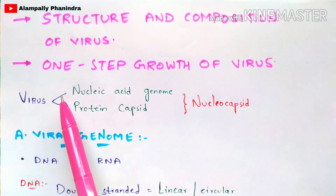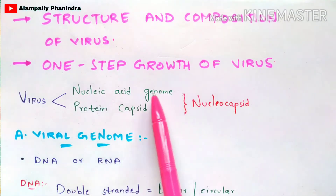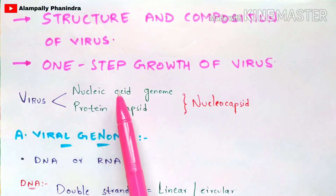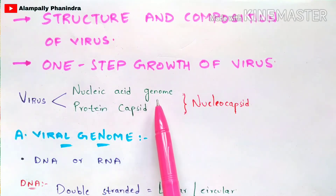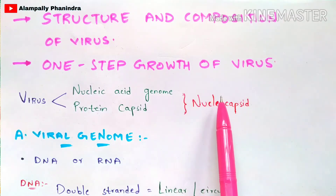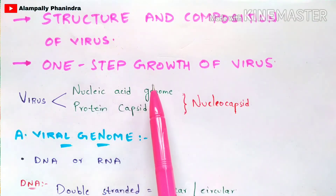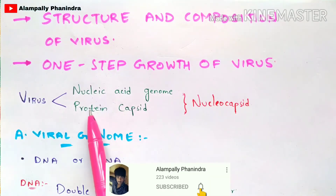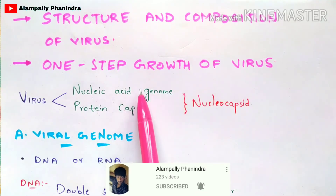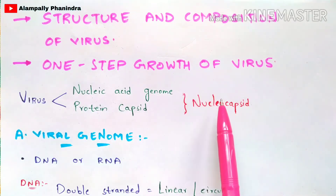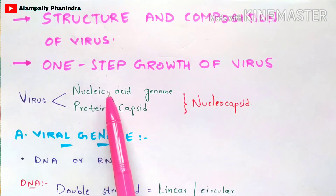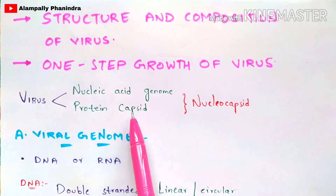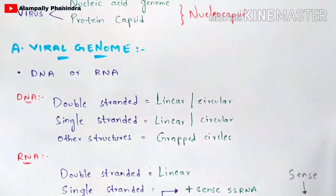Virus is made up of two major components: nucleic acid genome and protein capsid. Together, these constitute the nucleocapsid. The nucleic acid genome is the genetic material present in the virus, and it gets covered and protected by the protein capsid. This combination is called the nucleocapsid.